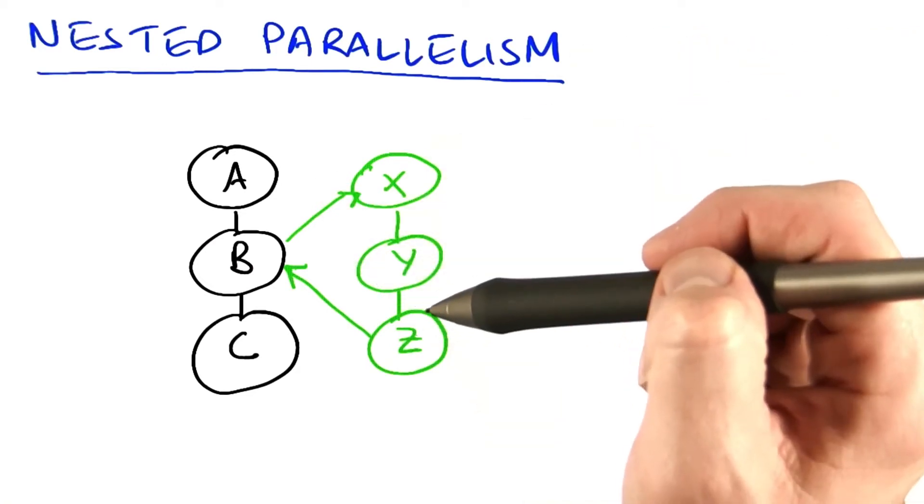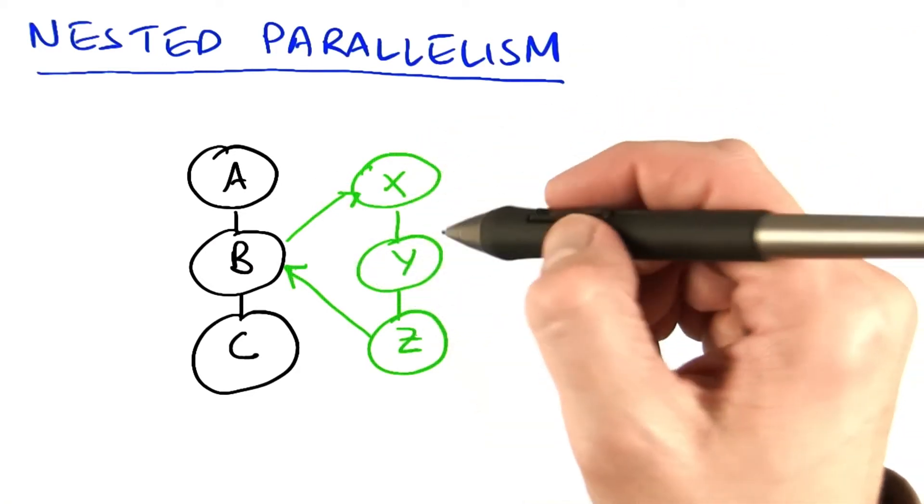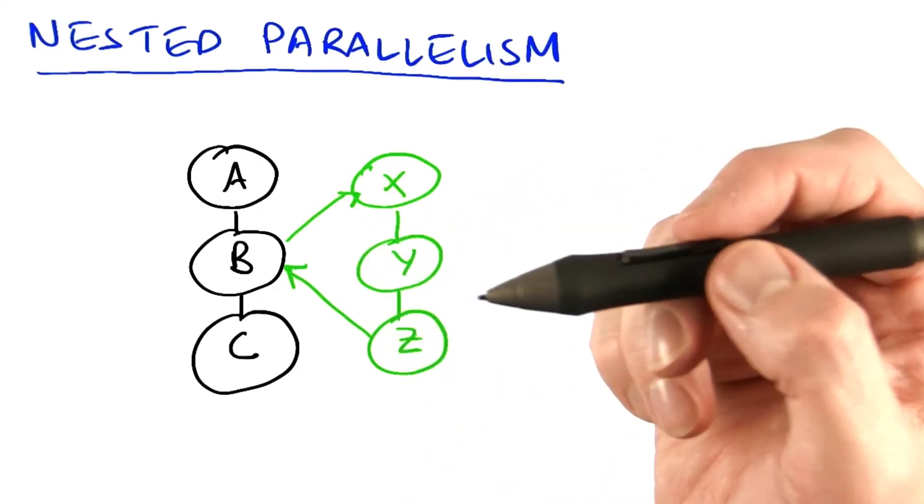So if I have a sequence of kernels a, b, and c inside a CUDA stream, and kernel b wants to do its own sequence of steps x, y, and z,